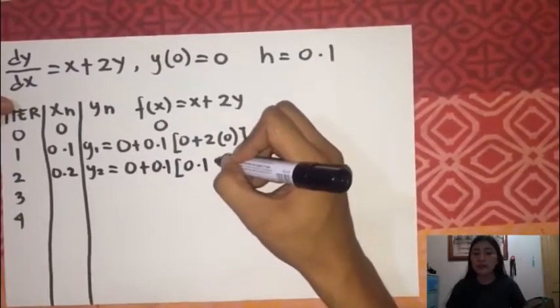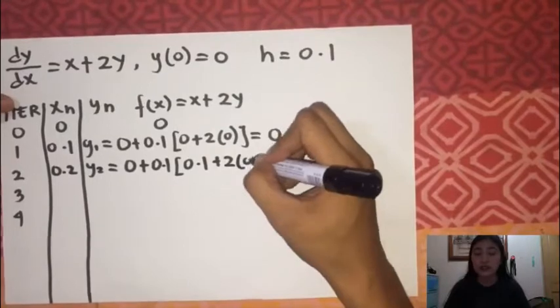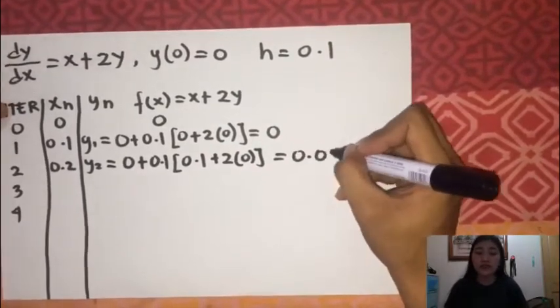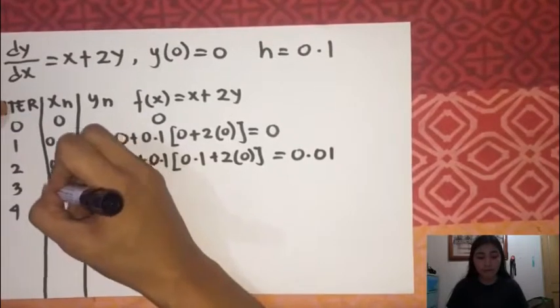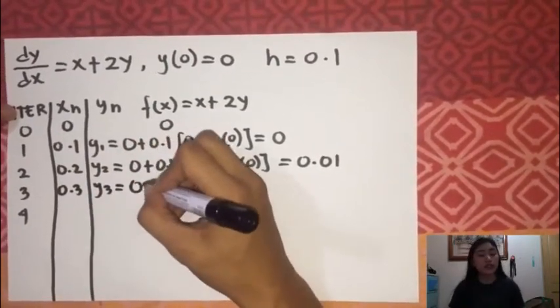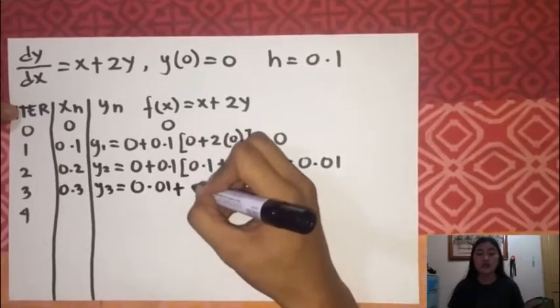Let's continue this step until we reach xn equals 0.4.